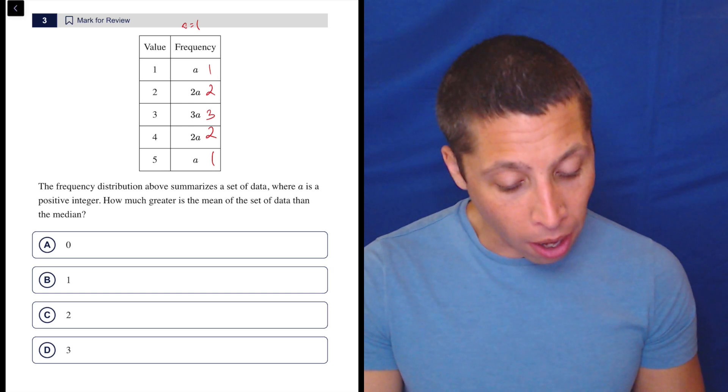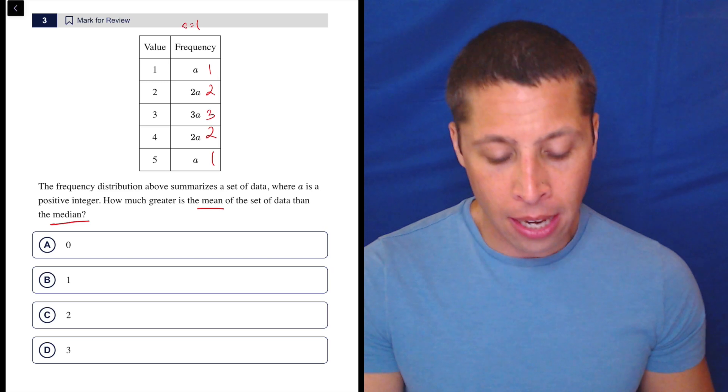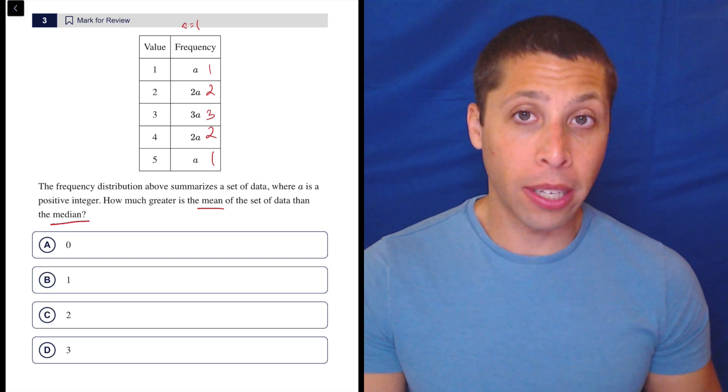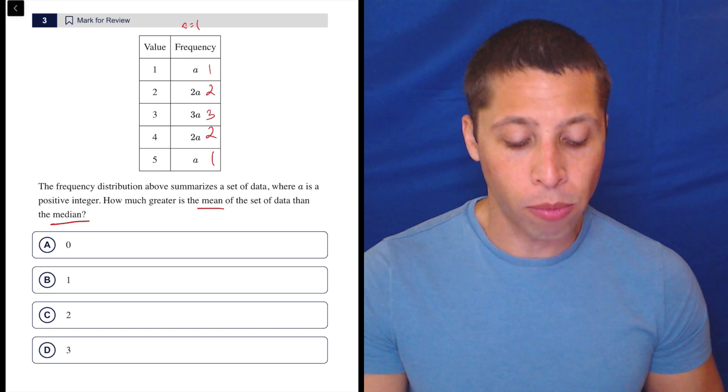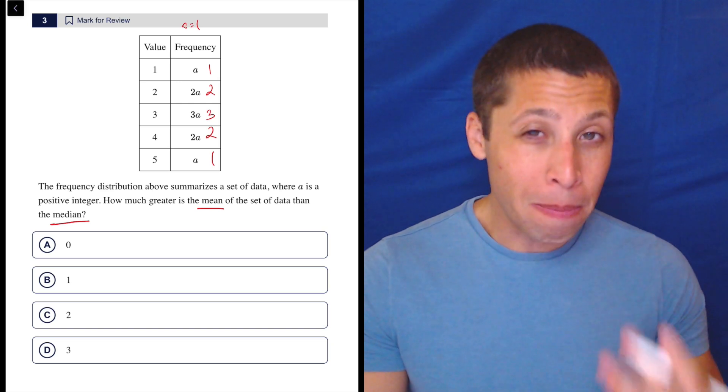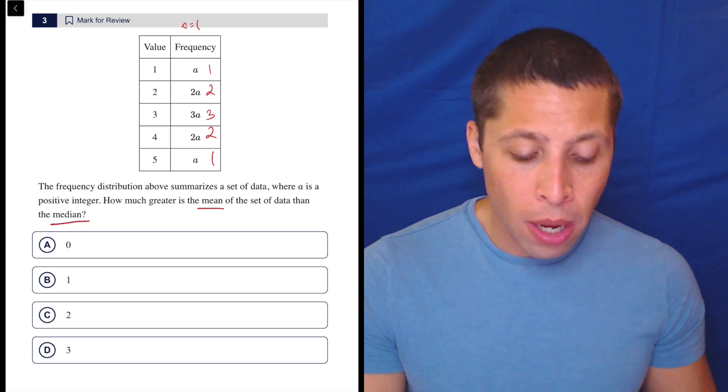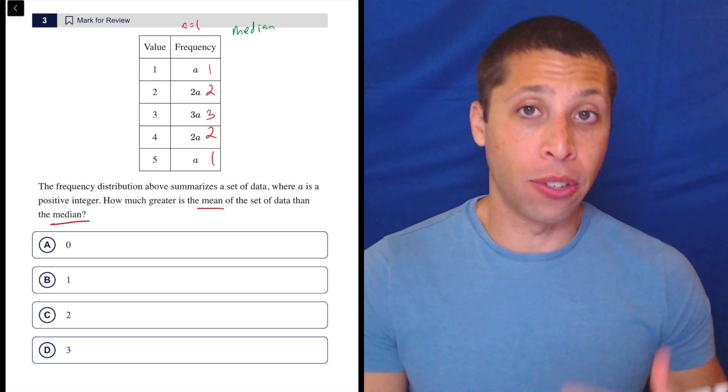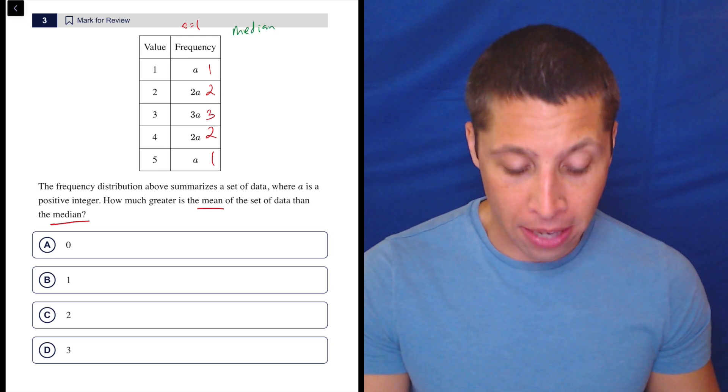Then I need to compare the mean and the median. So this is another case where maybe from experience, I kind of know what the answer is already. But you should be able to prove it if you need to. Remember, the median we're going to be able to get by crossing out numbers until we get to the middle value in a set.